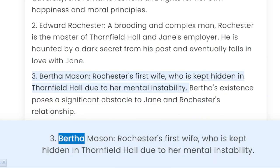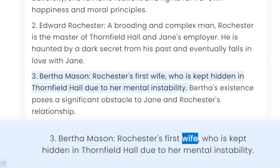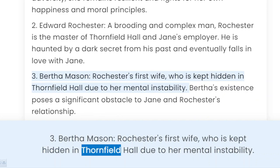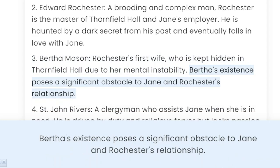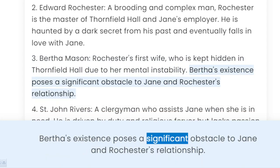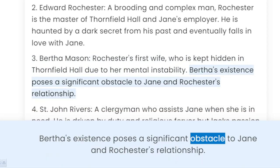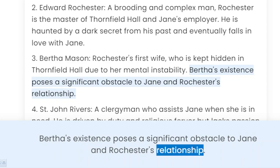3. Bertha Mason, Rochester's first wife, who is kept hidden in Thornfield Hall due to her mental instability. Bertha's existence poses a significant obstacle to Jane and Rochester's relationship.